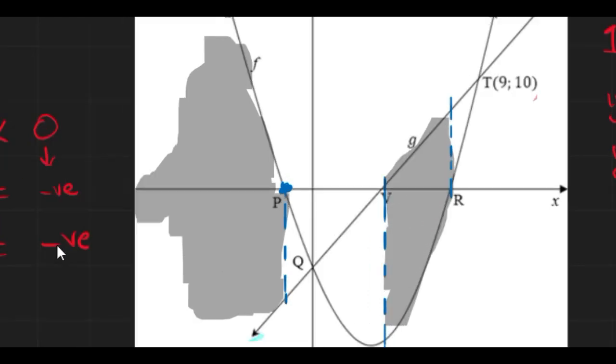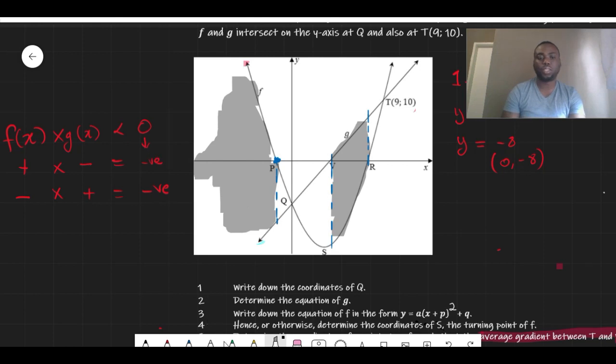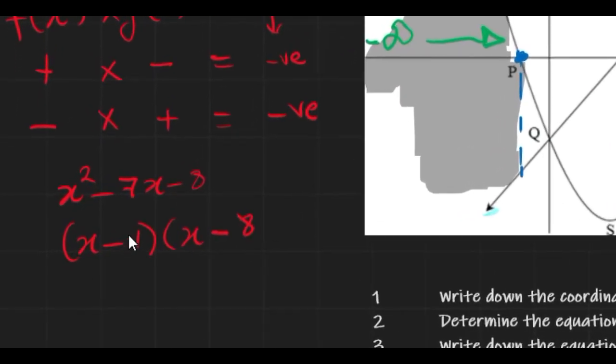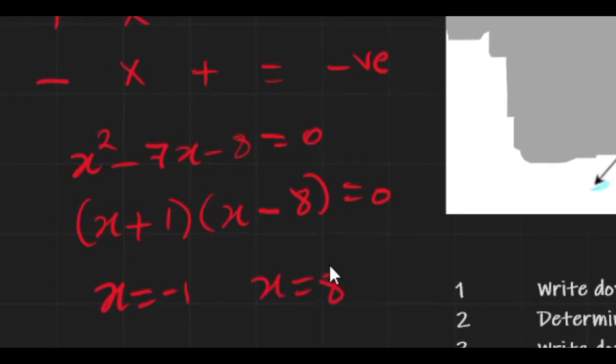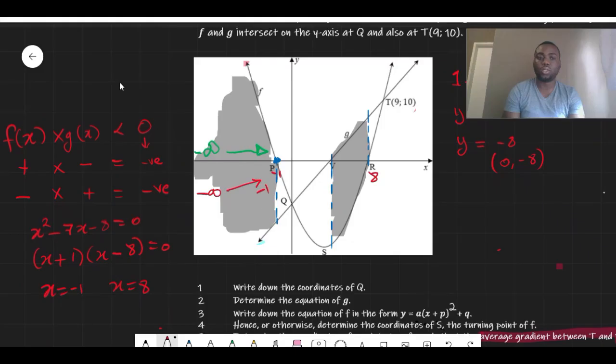The part you see shaded on your graph at the part in which one of the graph is positive and the other is simultaneously negative. For the first part we see over here, we notice that it is from negative infinity until it gets to P. So what we need to find out is what is the value of P over here. And since P is an x-intercept, we find the x-intercept for our parabola. So this is -1 and R is 8. So the first answer we're going to get is from negative infinity up to -1, so we can write it in this format.